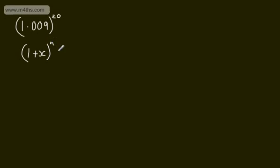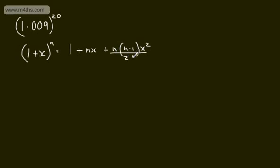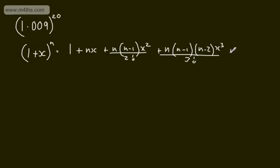Since we have a positive integer power, we expand this out. As seen in previous videos, this gives us 1 plus n times x, plus n(n−1) times x squared over 2 factorial, plus n(n−1)(n−2) times x cubed over 3 factorial, and so on. This expansion is often given in a formula book.